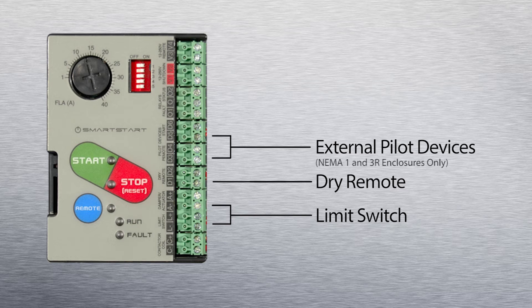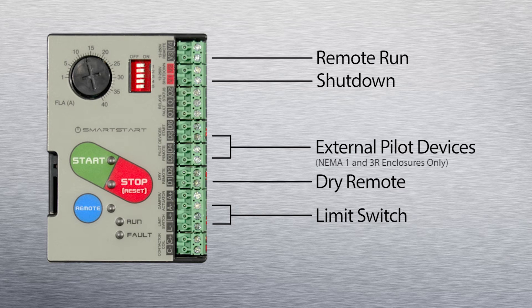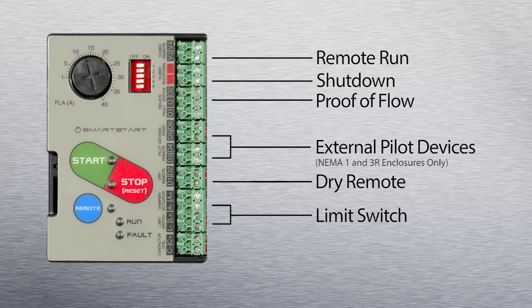It also has voltage inputs for remote run and shutdown, which can accept any voltage between 12 to 250 VAC or DC. The extensive automation capabilities on the ISS are completed with proof-of-flow current status and a fault output.